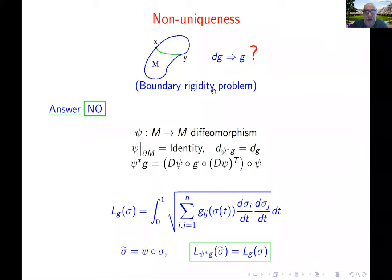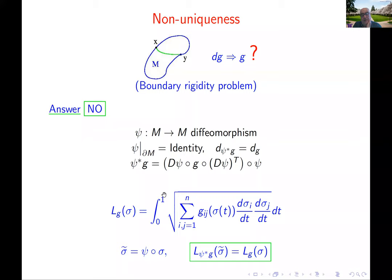The pullback of the metric under a diffeomorphism fixing the boundary gives the same distance function, so there is a large — in fact infinite-dimensional — group of non-uniqueness. In terms of matrices, the pullback is the composition of the Jacobian, the metric, and its transpose. But unfortunately, that's not the only non-uniqueness. If you have a point x₀ with very high metric — very low velocity — all geodesics avoid it, so you cannot determine anything about x₀.